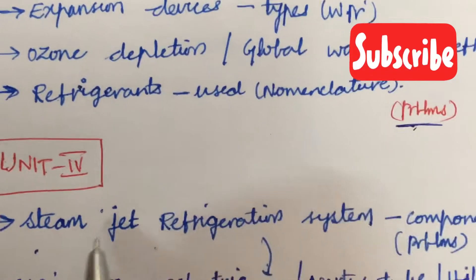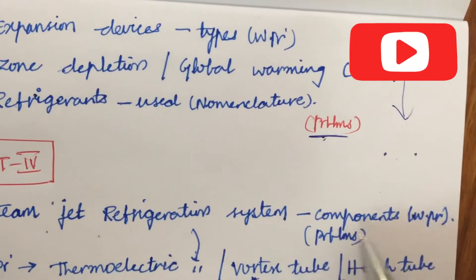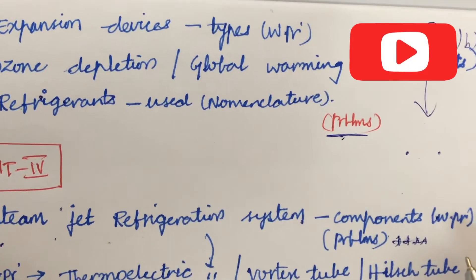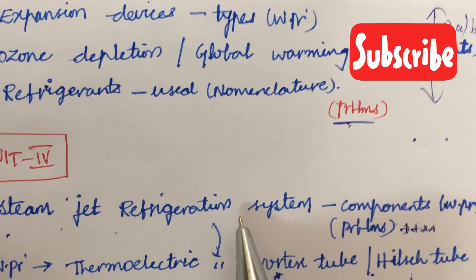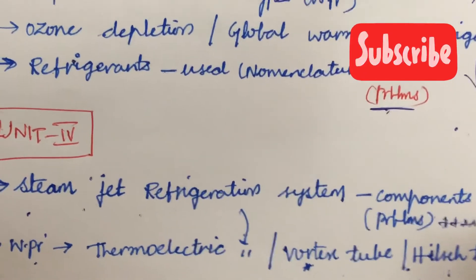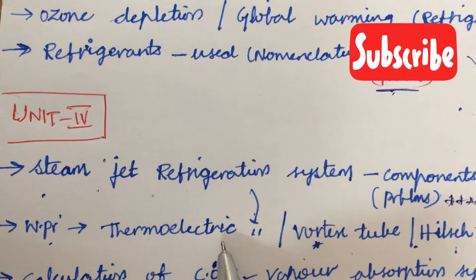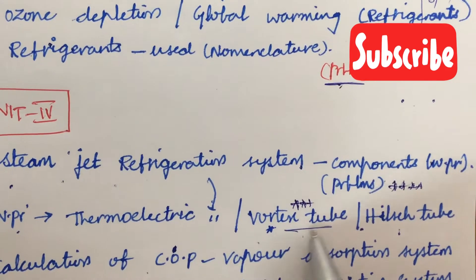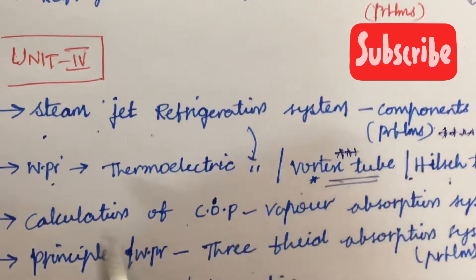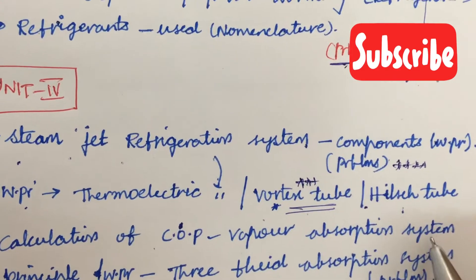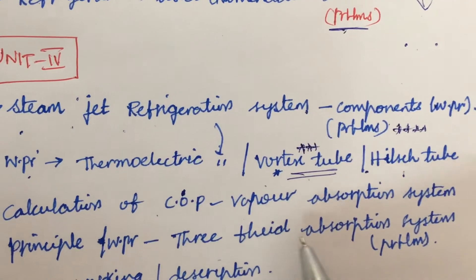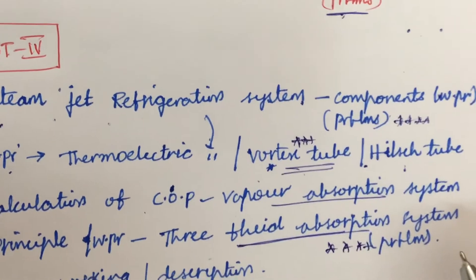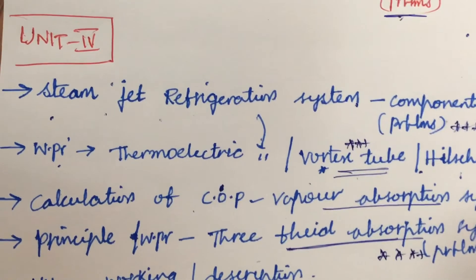Later, the fourth unit is all about the steam jet refrigeration system, its components as well as working principle and the problems. Wherever I am telling the problems, make sure to work out even the problems of that created concept. Before that you should have an idea of steam jet refrigeration system to its theoretical knowledge, failing which you cannot work out the problem. Later, the working principle of thermoelectric refrigerant system or the vortex tube or Hilsch tube. Based on this I can expect this vortex tube problem related to this for this time, that is a compulsory and the gunshot question. Later, the calculation of COP for vapor absorption system as well as the working principle of three fluid absorption system and the problems related to it. These are asked many number of times. We can expect direct sometimes 50 marks problem also from the unit 4, and we can expect only one question from the unit 4.